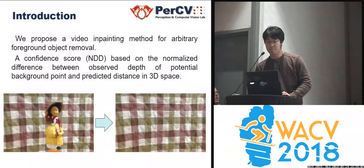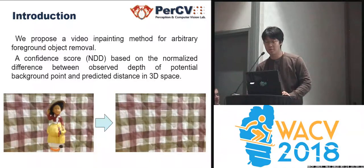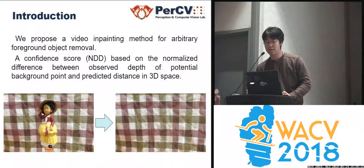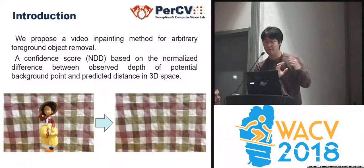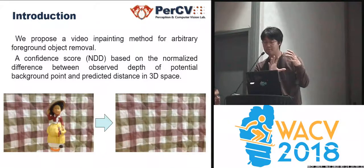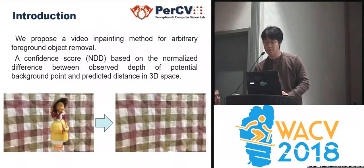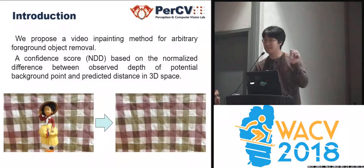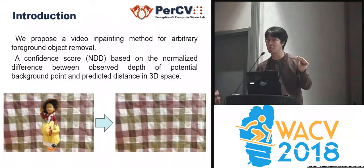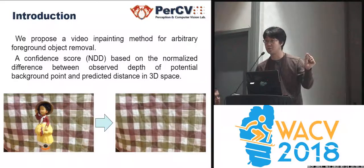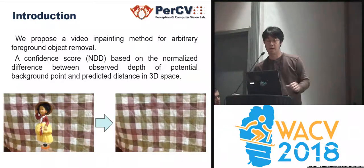For this work, we proposed a video inpainting method for arbitrary foreground object removal. To do this, we propose a confidence score called NDD, which is a normalized difference between observed depths from the view frame and the predicted distance between the camera and the target potential background. If that difference is small, that means the potential point has very high confidence to be background. We use that corresponding potential point to fill in the missing part, because removing the foreground means we have to fill in the missing background.